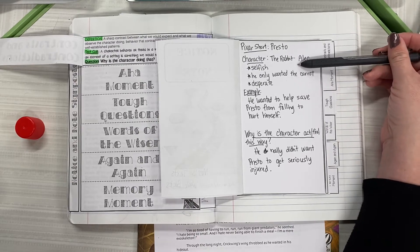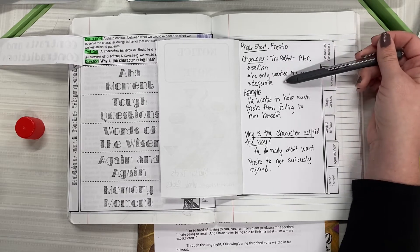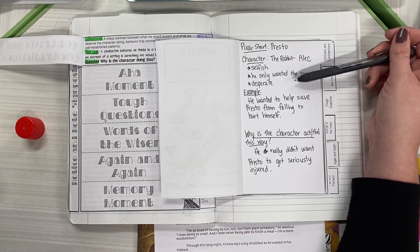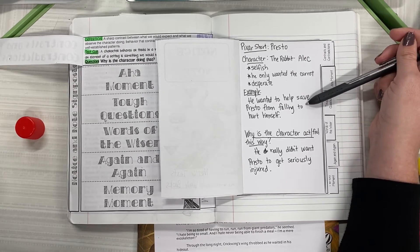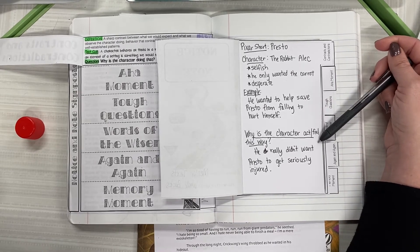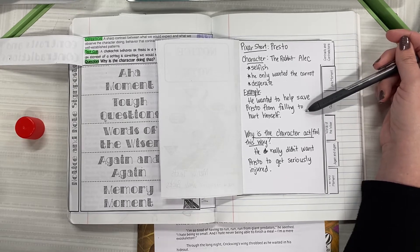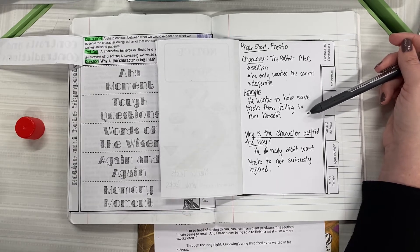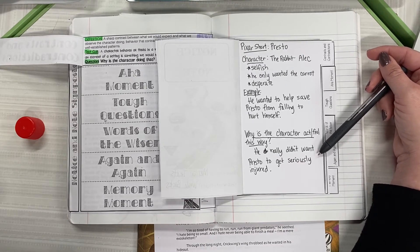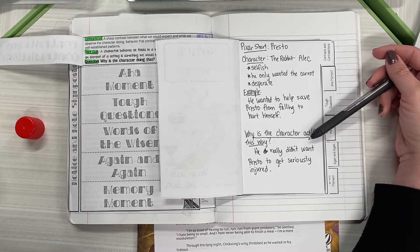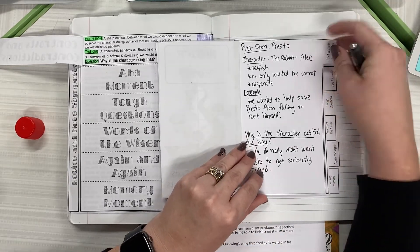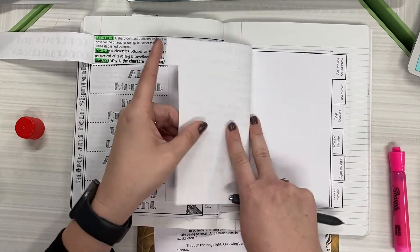We have to ask ourselves that original question from our original flipbook. Why is the character doing that? So we're going to write a question, why is the character acting or feeling this way? We're going to always take note of the question as a reader that we are trying to answer based on our noticing of this contrast in the character's original behavior. Why is the character acting or feeling this way? Well, he really didn't want Presto to get seriously injured. For Alec to suddenly try to save Presto from falling to hurt himself, he didn't want him to actually get injured. He just was being selfish originally and decided that he really didn't want Presto to get injured just because he wasn't giving them the carrot.